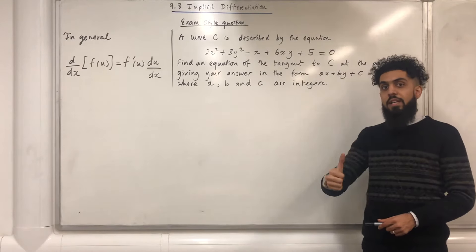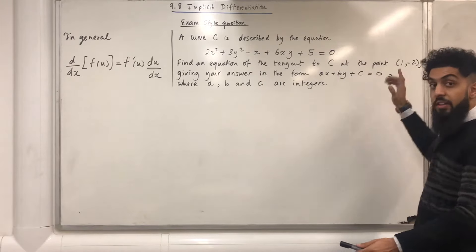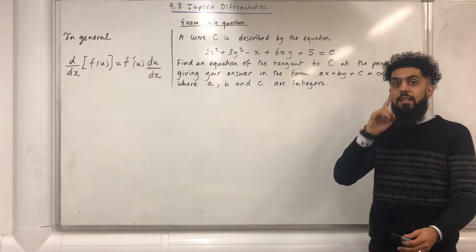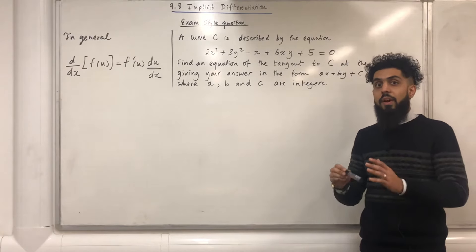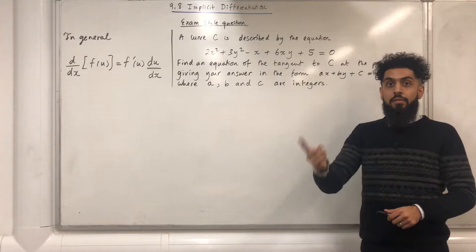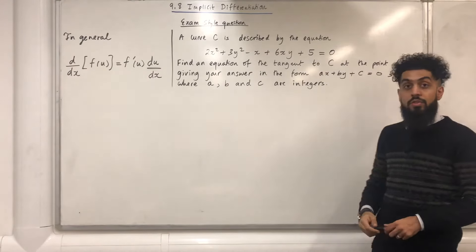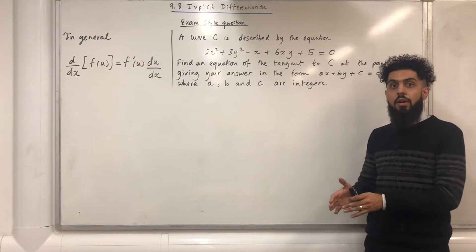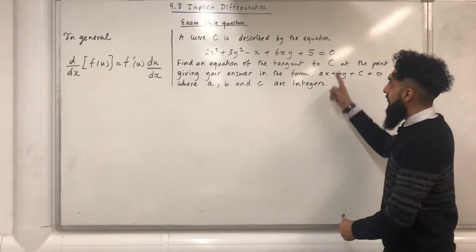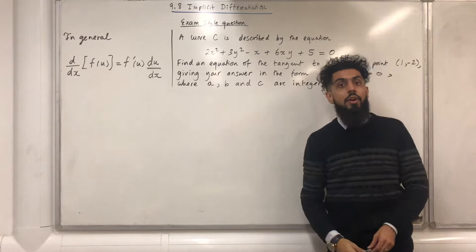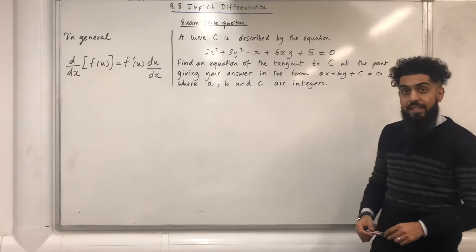Once we have the gradient of the tangent, and we know that the tangent passes through the point (1, −2), we can find the equation of the line using y minus y1 equals m times (x minus x1). We then rearrange it in the form ax plus by plus c equals 0, where a, b, and c are integers. We have an implicit equation here because neither x nor y is the subject, so we need to use implicit differentiation.